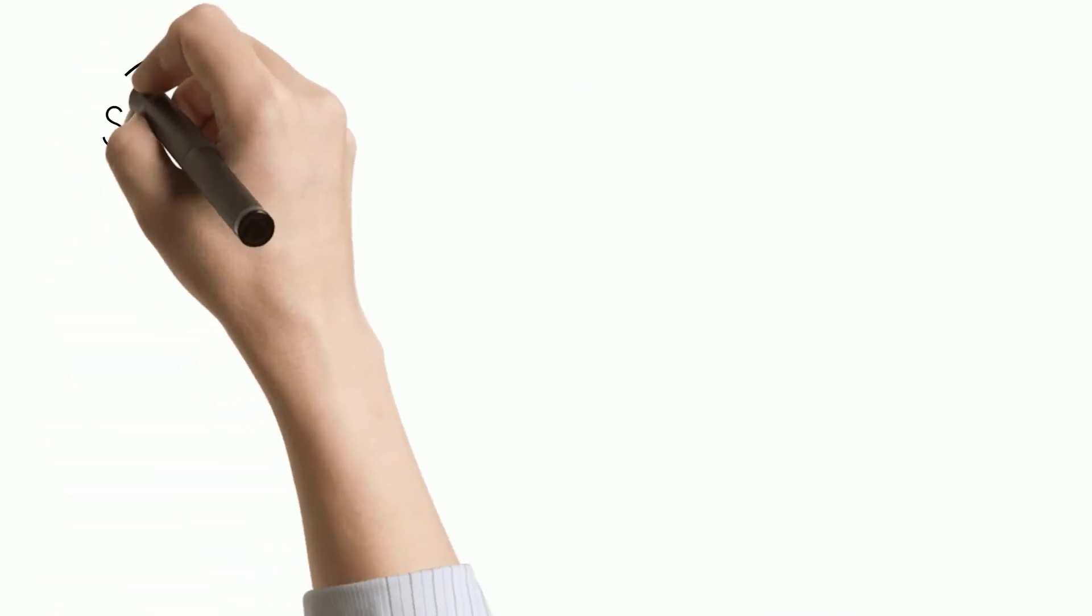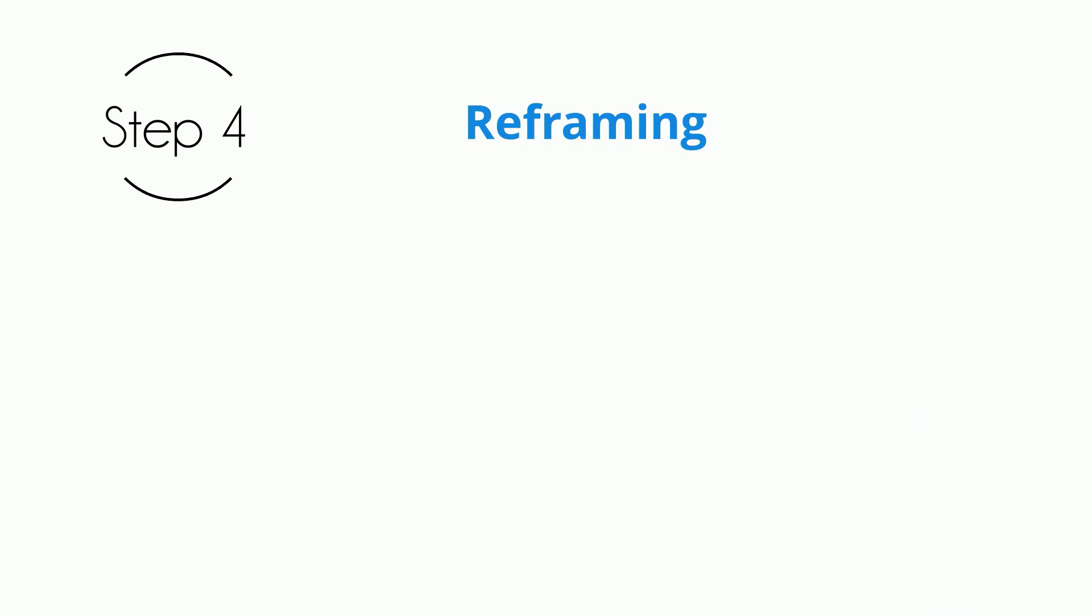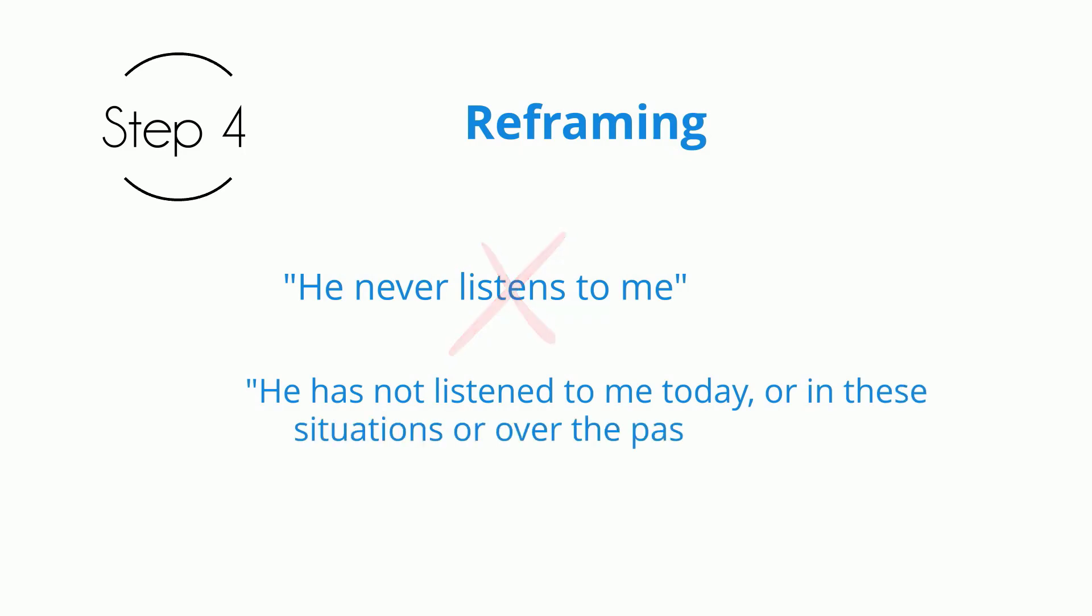Step four: rephrasing or reframing. As you now have done a thorough assessment of your thoughts, you can then reframe them and make them more realistic. For example, instead of saying that person never listens to me, see how often he or she actually listens. Instead you can say he has not done so today or two times last week or last month. There may be a reason why the person didn't. You could also look into that.